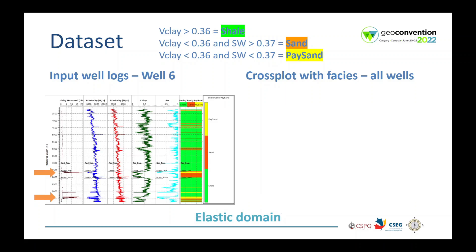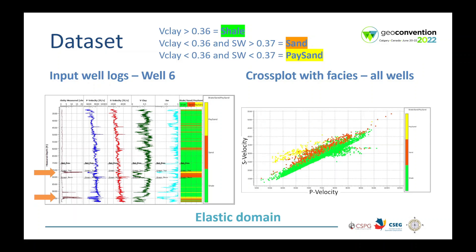Here we are going to see the elastic domain. Noticing the well log drop in p-velocity in the region of paste sand. Now we have the cross plot showing p-velocity against s-velocity, and we can also see a good definition of the facies. Paste sand is also clearly defined in this domain, so the rule applied for facies classification makes sense.